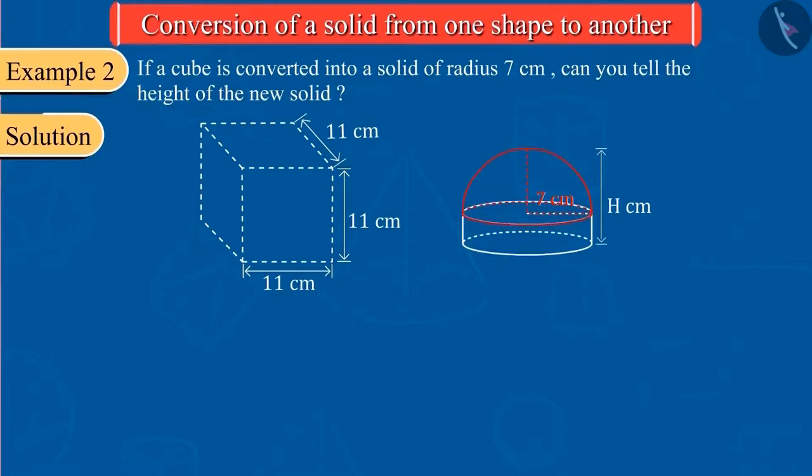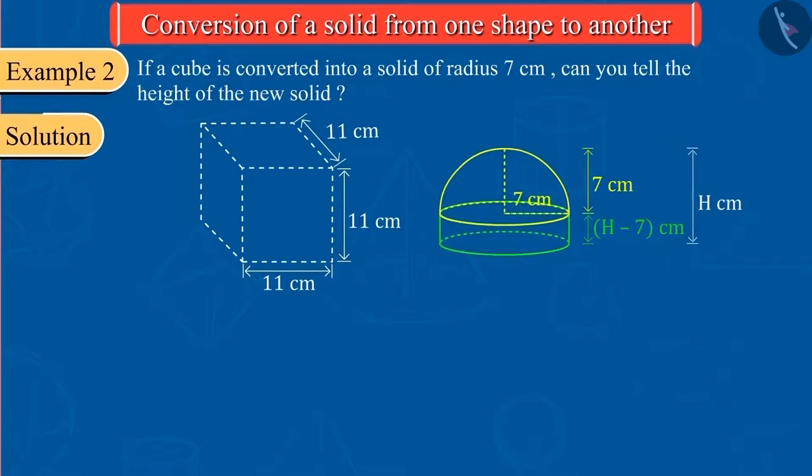For a hemisphere, its radius will be its height. So, what should be the height of the cylinder? Since the total height of the solid is H and the height of the hemispherical part is 7 cm, therefore, the height of the cylindrical part will be H minus 7. Can you guess the next step now?